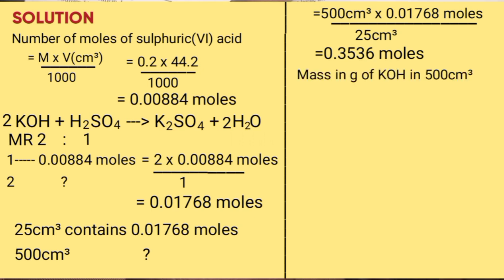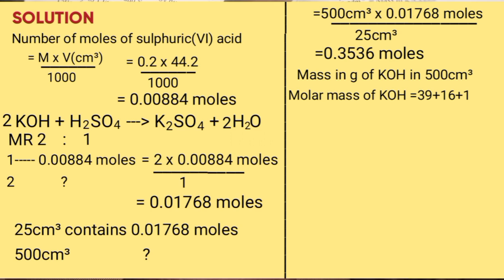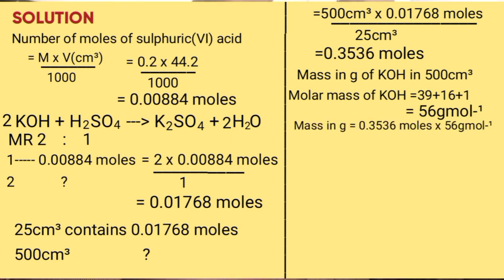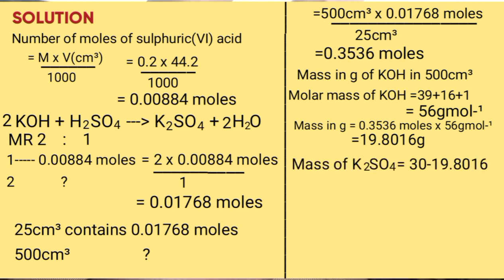Mass in grams of potassium hydroxide = number of moles times molar mass. Use the moles from 500 cm³, because you need the mass of potassium hydroxide in the full 500 cm³ to subtract from 30 grams to get the mass of potassium sulphate. Molar mass of potassium hydroxide = 39 + 16 + 1 = 56 g/mol. So mass = 0.3536 × 56 = 19.8016 grams. Mass of potassium sulphate = 30 − 19.8016 = 10.1984 grams.